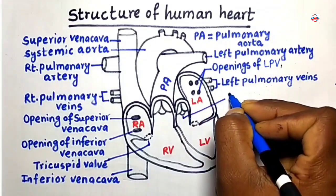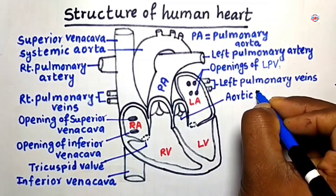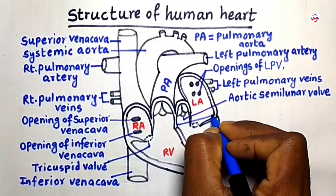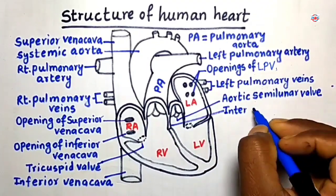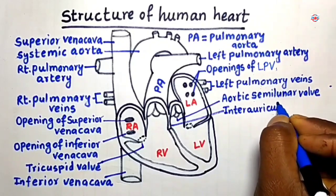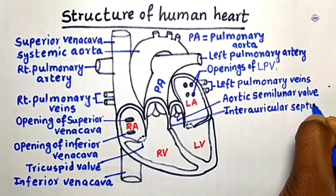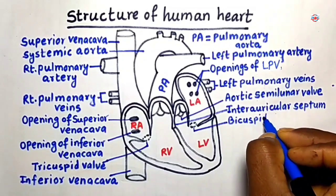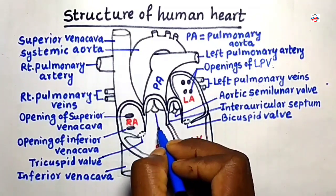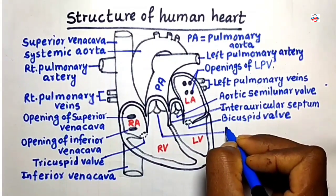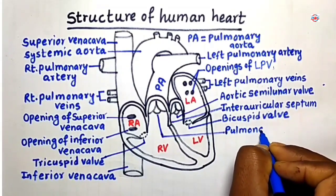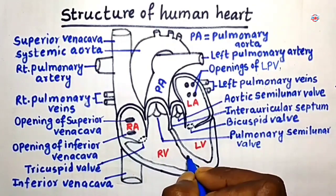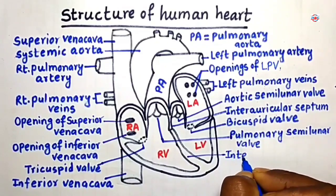This is called Inferior Venakabha. This is called Bicuspid Valve. This is called interventricular septum.